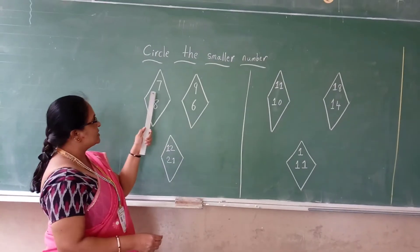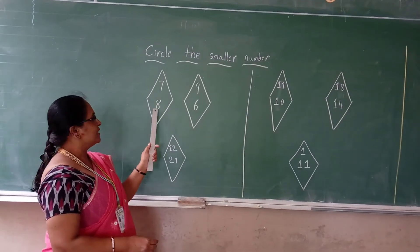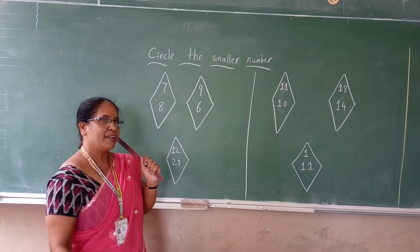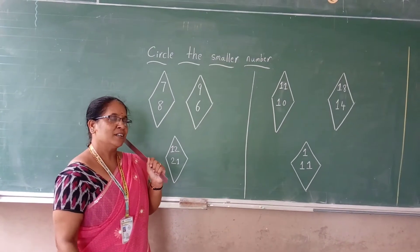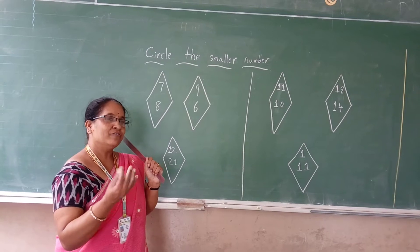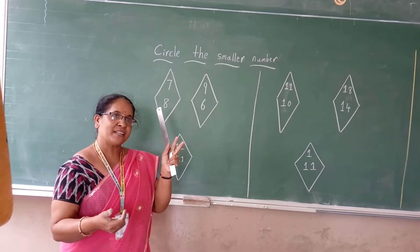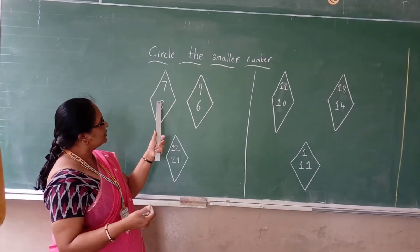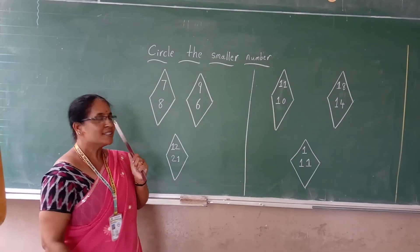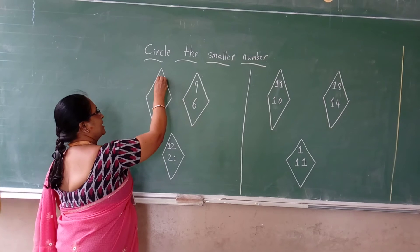See what is the number here? 7. 8. Which is the smaller number? Tell me. Once you count it: 1, 2, 3, 4, 5, 6, 7. In the same box the number is coming. When you count the numbers, which one is the smaller number? 7. Very good. Circle it.